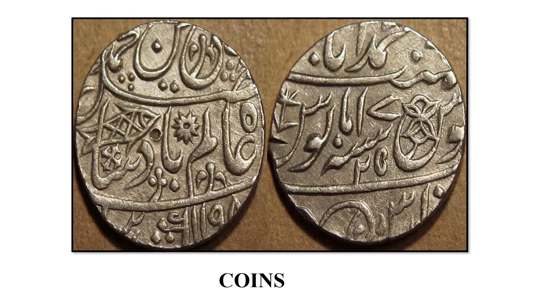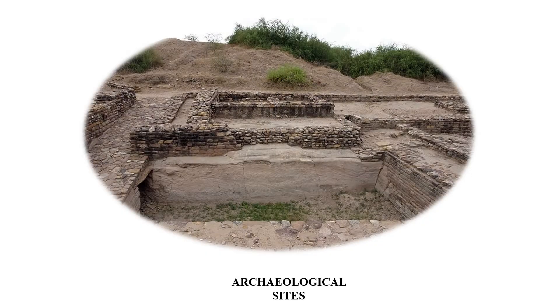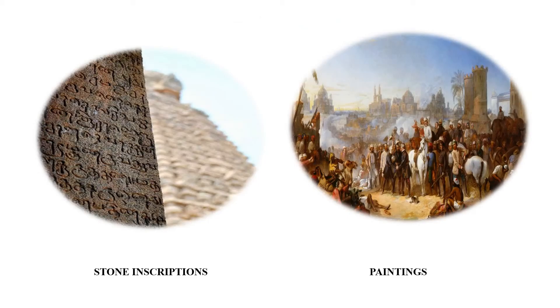What are the sources of history? Historical sources include documents, coins, artifacts, archaeological sites, stone inscriptions, paintings, recorded sounds, and oral history.